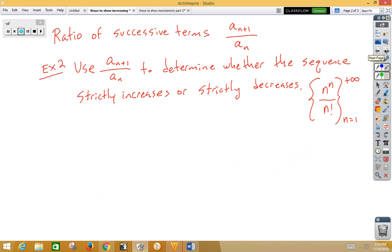So again, we have brace notation here. So our general term is n to the n divided by n factorial. So a sub n is n to the n over n factorial.